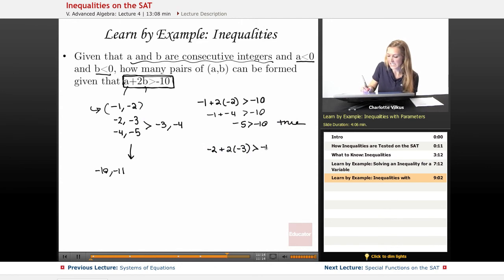and see if that's going to be greater than negative 10. So here we're going to have negative 2 plus negative 6 greater than negative 10. And negative 8 is greater than negative 10. Also true. So we have a second pair. So right now we have both of these two pairs.